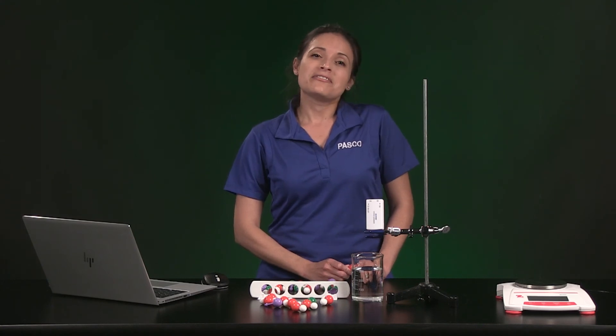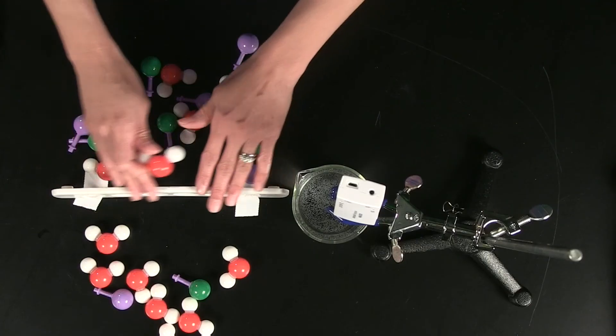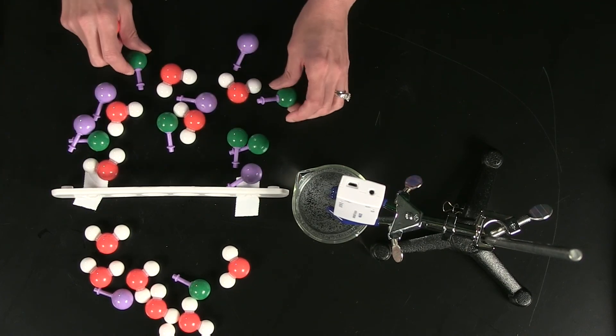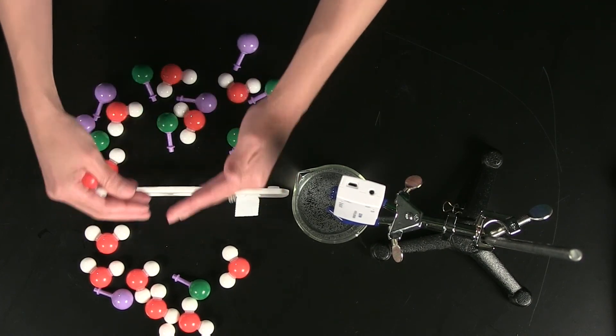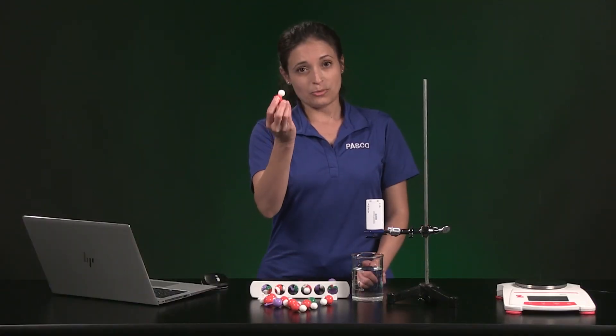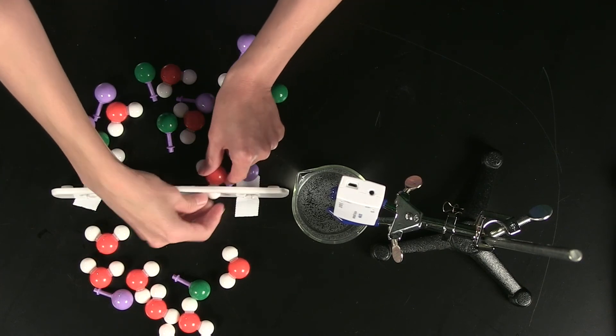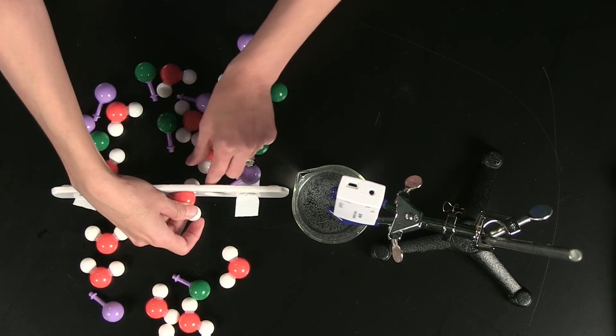Today we are going to investigate how fast water moves across a semi-permeable membrane when the concentration of a dissolved solute is different on either side of the membrane. The process of a solvent such as water moving from an area of low solute concentration to high solute concentration is called osmosis.